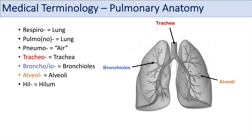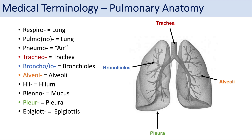Other prefixes you might not hear as often include hyl, relating to the hilum — you can think of hilar adenopathy. Another prefix is bleno, referring to mucus. Another one is pleur, referring to the pleura, the lining around the lungs — you can think of pleuritis. Terms relating to upper airway structures include epiglot or epigloddy, which refers to the epiglottis, the covering that covers the larynx during swallowing. And crico refers to the cricoid cartilage.